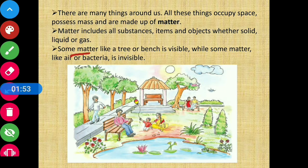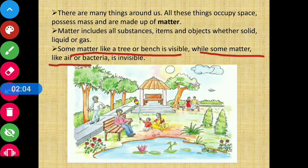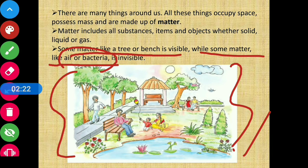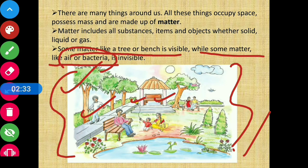Some matter like a tree or bench is visible. While some matter like air or bacteria is invisible. Looking at a picture, all the things we can see — trees, human beings, balloon, bench — these things are all matter which we can see.